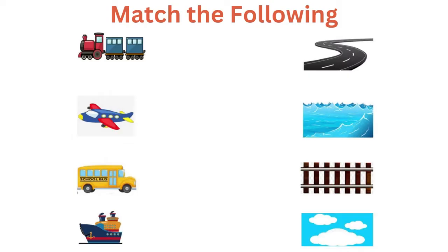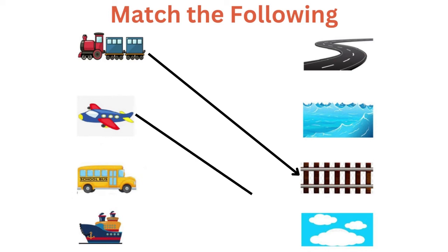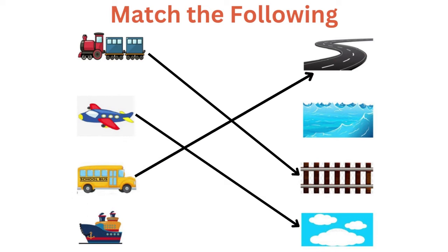Let us match the vehicles with the correct mode of transport. The train runs on a track — match it with the track. The plane flies in the air. The school bus goes on the road. The ship goes on the water.